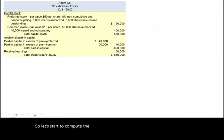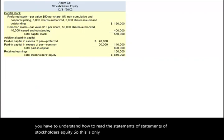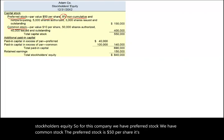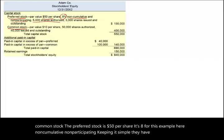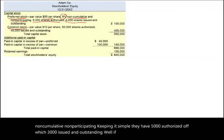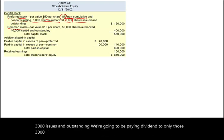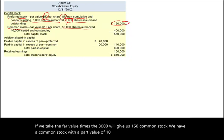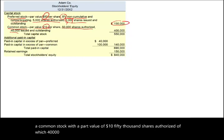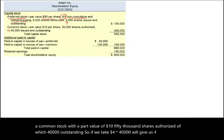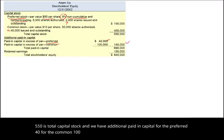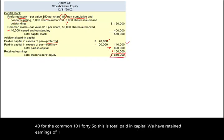Let's compute the book value per share for this sample company. First, understand how to read the statement of stockholders' equity — this is only the equity section of the balance sheet. We have preferred stock at $50 par, 8%, non-cumulative, non-participating, with 5,000 authorized and 3,000 issued and outstanding — giving a par value total of $150,000. Common stock has a $10 par value, 50,000 authorized, 40,000 outstanding — giving $400,000. Total capital stock is $550,000. Additional paid-in capital is $40,000 for preferred and $100,000 for common, totaling $140,000. Retained earnings are $150,000, making total stockholders' equity $840,000.